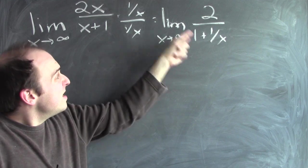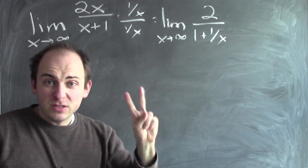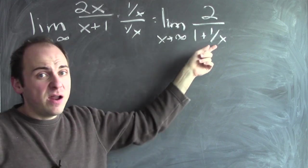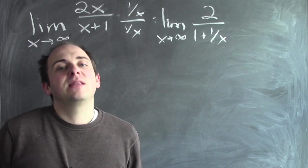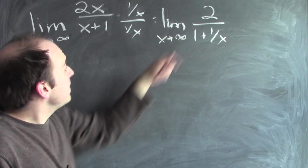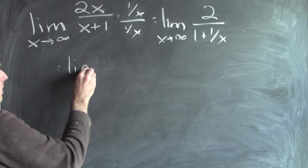Maybe it doesn't look like I've made a lot of progress here, but this is huge progress. The limit of the numerator is now a number, it's 2, and the limit of the denominator is also a number and a non-zero number at that. So I can use my limit law for quotients. This is the limit of a quotient, which is the quotient of the limit.